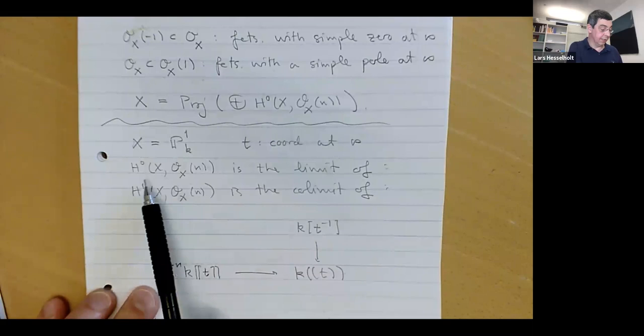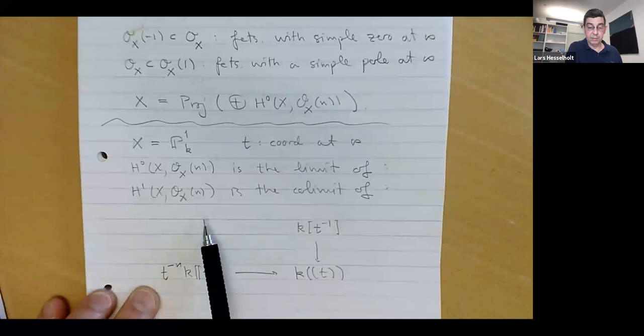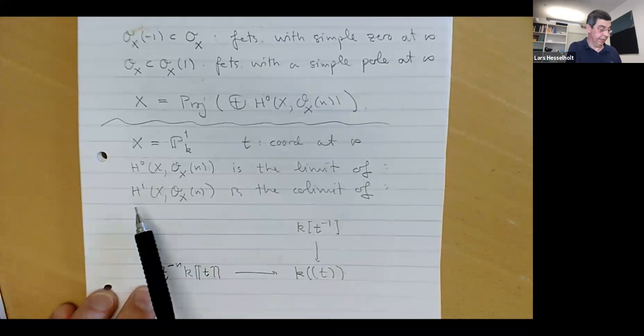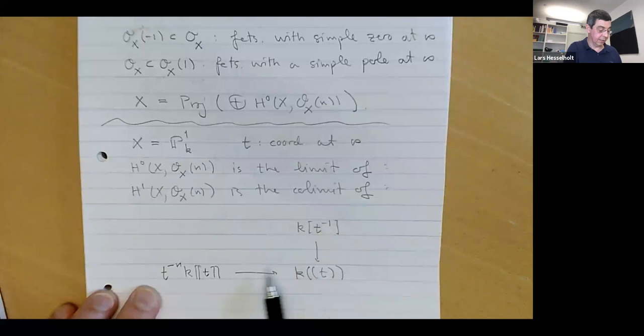We can then calculate the global sections — that's the limit of this diagram. It's the part here and here that meets there, and H1 is the colimit — the parts in here that are not hit by these two maps.